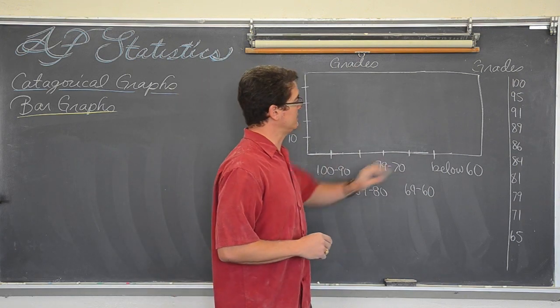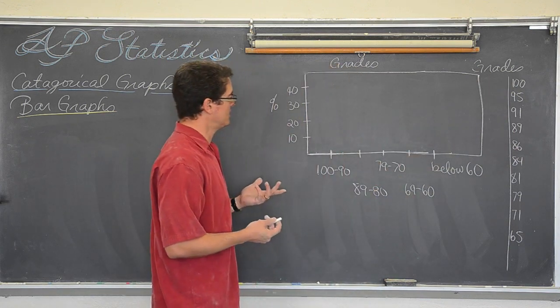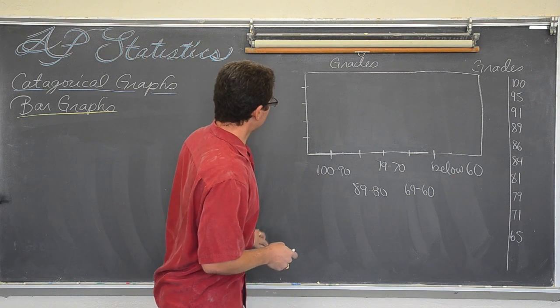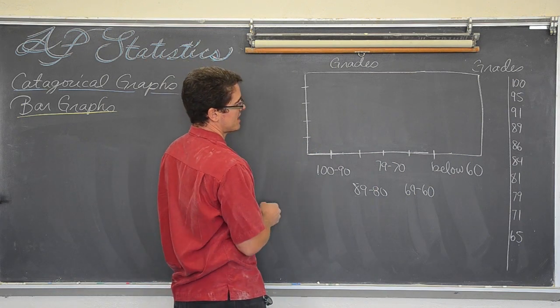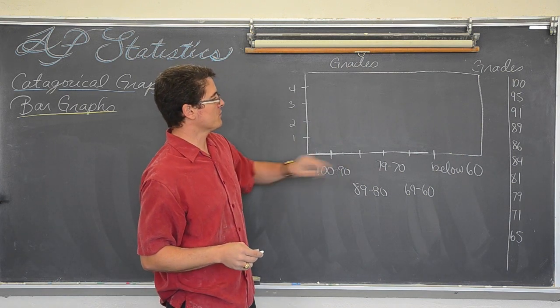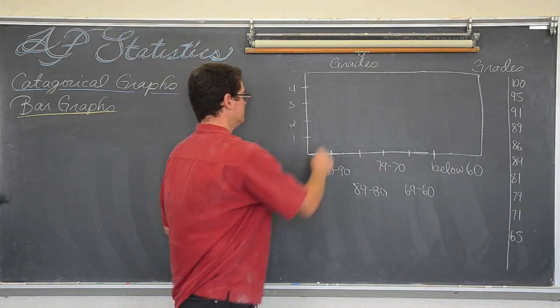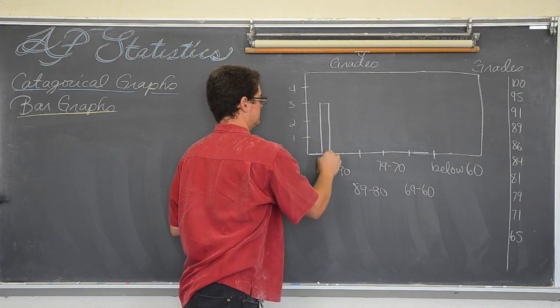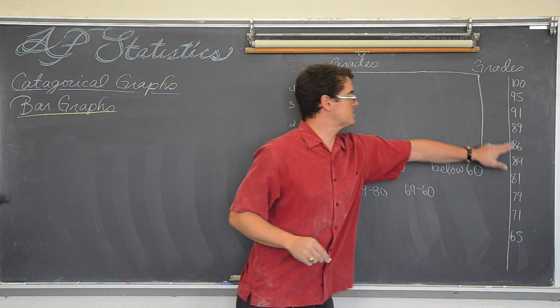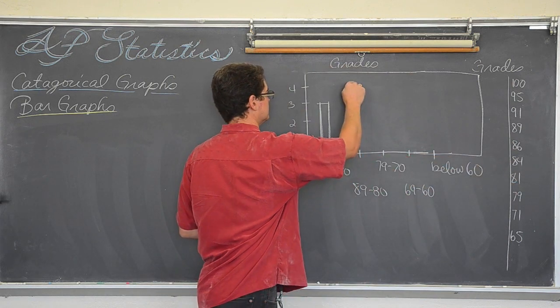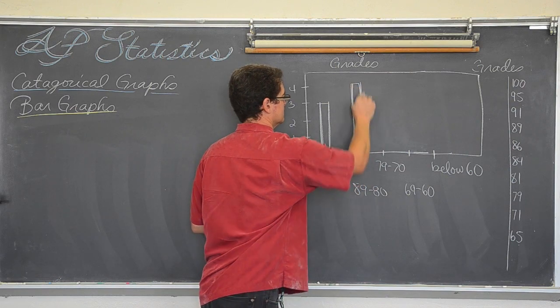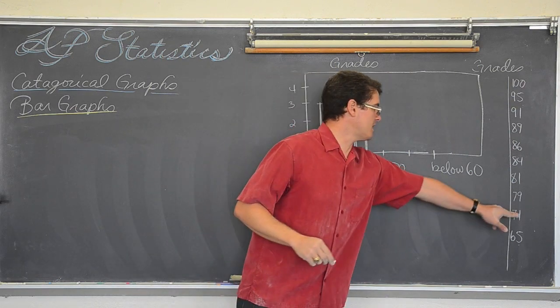So 190. Well, that is three people out of, you know what, let's do a frequency on the y axis instead of a percent. So 1, 2, 3, 4. So I have three people in the 90's to 100. I have got 1, 2, 3, 4 people in the 80's.